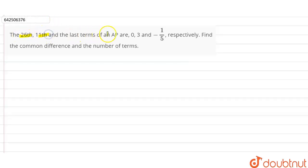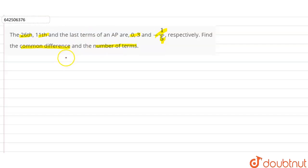Hi students. Our question is: the 26th, 11th, and last term of an AP are 0, 3, and -1/5 respectively. Find the common difference and the number of terms. So it is given that the 26th, 11th, and last term of the AP are 0, 3, and -1/5. We have to find the common difference and the number of terms.